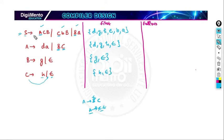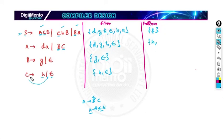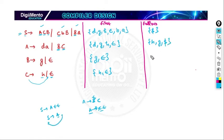Now calculate FOLLOW. FOLLOW(S) = {$} since S is not present anywhere else. FOLLOW(A): A appears in S → ACB, followed by C. FOLLOW(A) includes FIRST(C) = {h}. Since C can be epsilon, we include FIRST(B) = {g}. Since B can also be epsilon, FOLLOW(A) = FOLLOW(S) = {$}. So FOLLOW(A) = {h, g, $}.